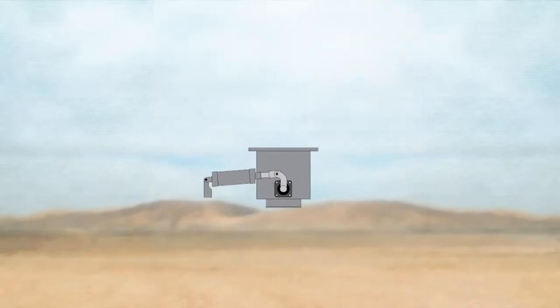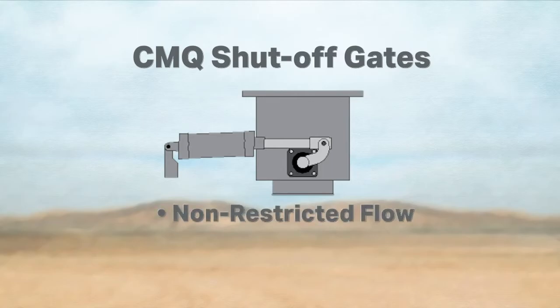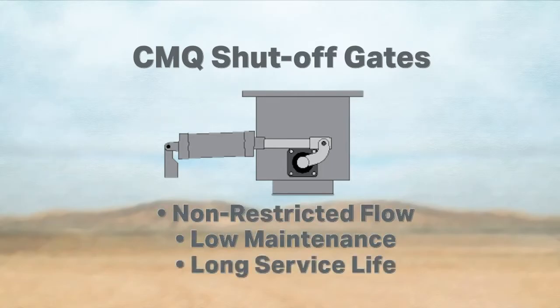Discharge from the silos is controlled by our CMQ shutoff gates, which are proprietary. Again, they afford fast cement discharge. They're very durable and very accurate.